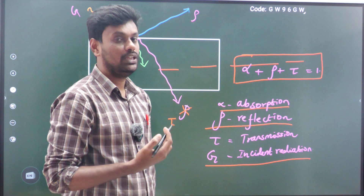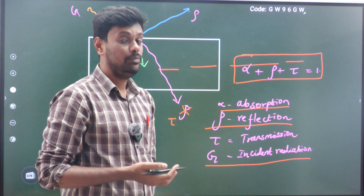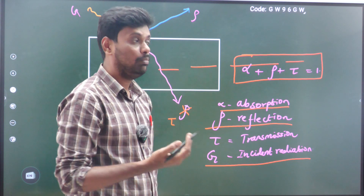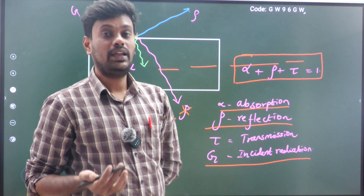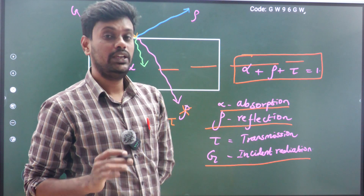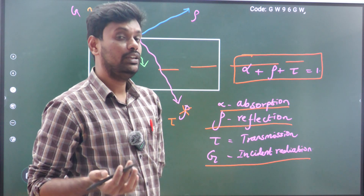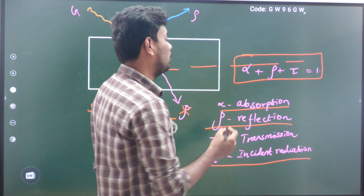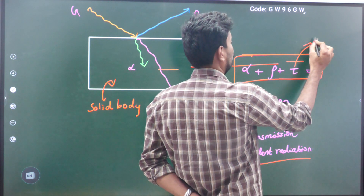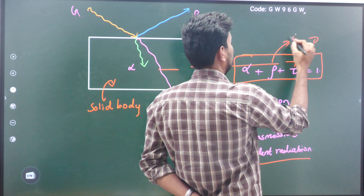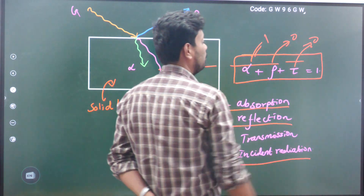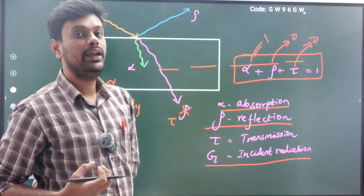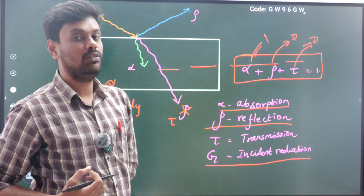For a black body — a black body is a perfect emitter and also a perfect absorber. For a black body, it will not transmit and it will not reflect; it will absorb the maximum energy only. So for a black body, tau equals zero, rho equals zero, and alpha equals one, because the whole incident energy is absorbed.